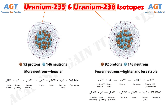Both Uranium-235 and Uranium-238 isotopes are radioactive. Although they have different half-lives, nuclear fuel used in reactors of nuclear power plants contains both isotopes in varying proportions.